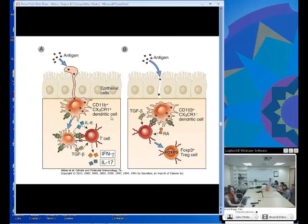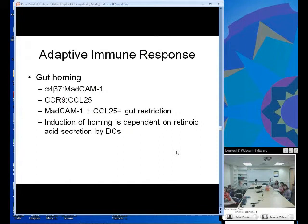This is a picture from Abbas showing that. This is the CD11B positive dendritic cell with an extension that comes up through the epithelial cells. It samples antigen, downregulates CD11B and upregulates CD103 when it presents to T cells, helping them become FOXP3 positive cells.